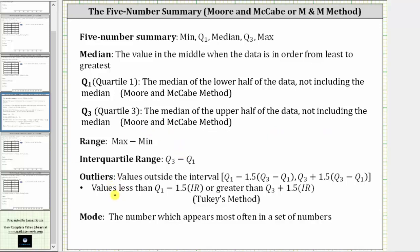And then to find the outliers, the outliers are the values that are less than Q1 minus 1.5 times the interquartile range, or greater than Q3 plus 1.5 times the interquartile range. And the interquartile range is Q3 minus Q1. And this is Tukey's method.